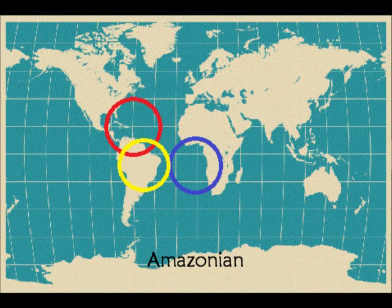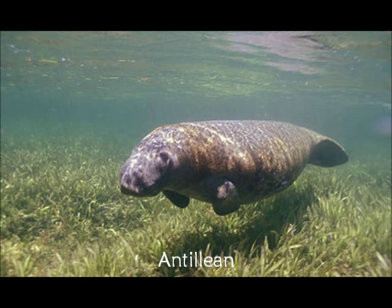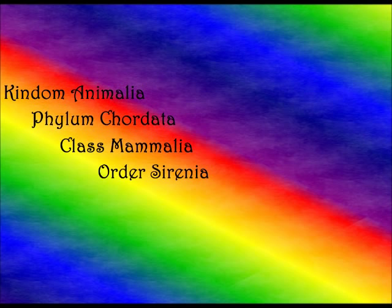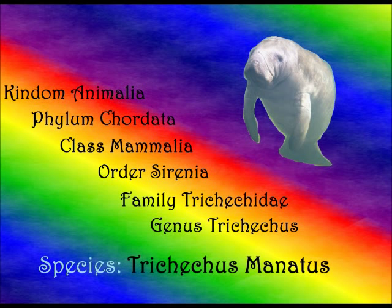Other types you may have heard of are the Florida manatee and the Antillian manatee, which are subspecies of the West Indian manatee. The classification of the manatee is: Kingdom Animalia, Phylum Chordata, Class Mammalia, Order Cyrenia, Family Trichicidae, Genus Trichicus, and Species Trichicus manatus.